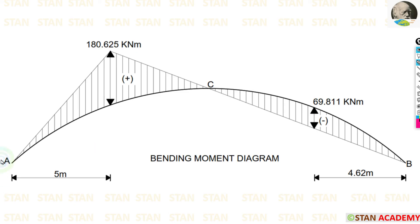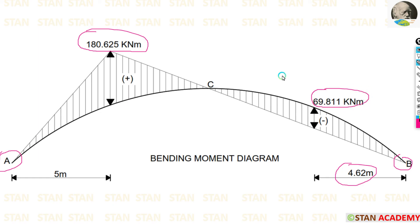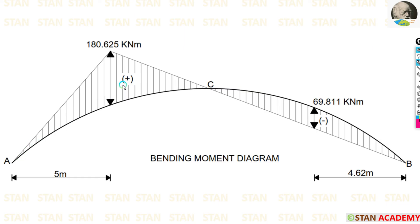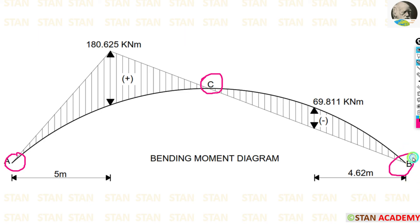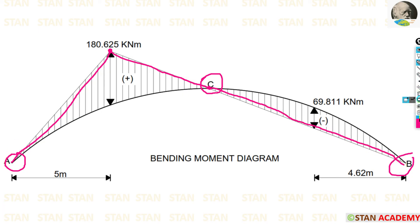Now we can draw the bending moment diagram. At 5 meter from the left hinge we have the maximum positive bending moment of 180.625 kN·m, and at 4.62 meter from the right hinge we have the maximum negative bending moment of 69.821 kN·m. Positive values are drawn above the arch and negative values below. At the crown C, the bending moment is zero, and at points A and B the bending moment is also zero because there are hinges there. To draw the diagram: mark the maximum bending moments, connect from A to the positive peak, then connect to the crown where BM is zero, then draw a straight line towards point B passing through the negative region.